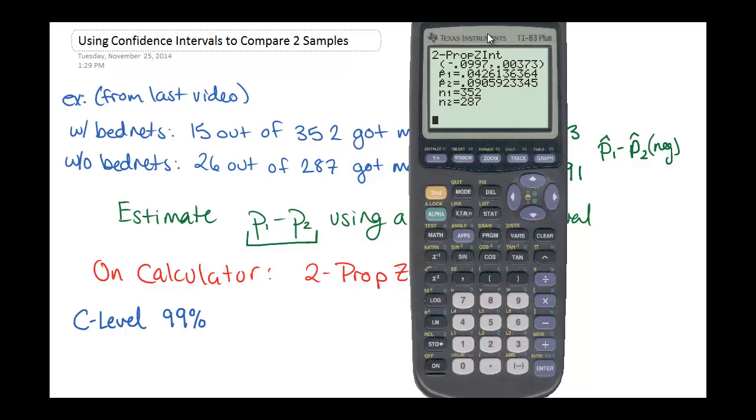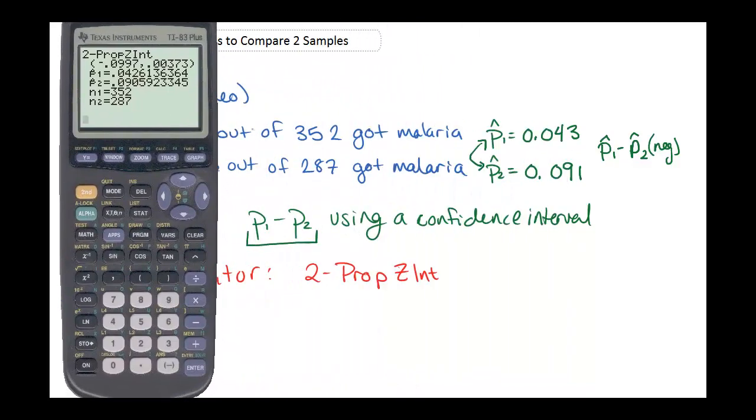So we calculate and we get this interval that says that the difference between p1 and p2 is between negative 0.0997 and 0.00373. Now you'll notice that this confidence interval contains 0 since one side is negative and one side is positive.